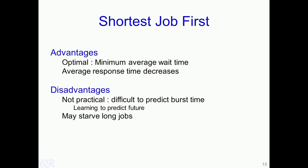The advantage of the SJF scheduling algorithm is that it is optimal — it always gives the minimum average waiting time, which also reduces average response time. The main disadvantages are that it is not practical because it is very difficult to predict burst times, and some jobs may starve: a process with an extremely long CPU burst time may never get a chance to execute if shorter jobs keep arriving.